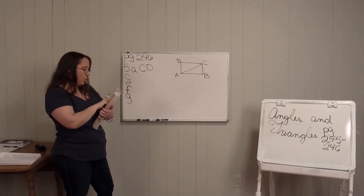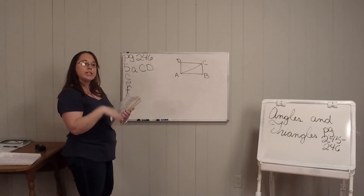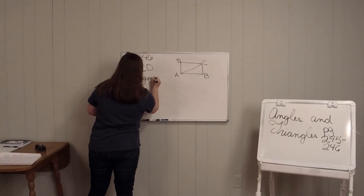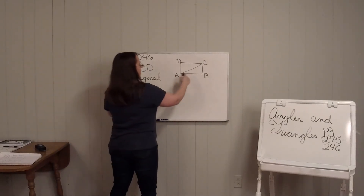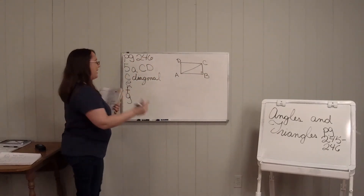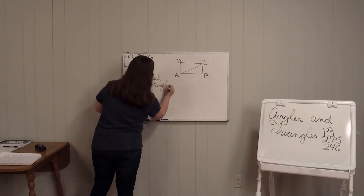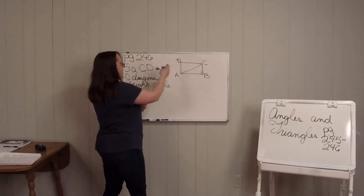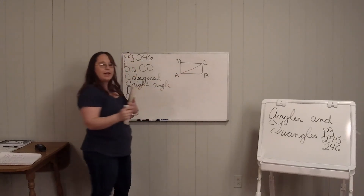Look at C: what is line AC called? Remember back in geometry — it's called a diagonal. Look at E: what kind of angle is angle ABC? You can put your little square there, which means it's a right angle. And F: diagonal AC divides ABCD into how many triangles? How many triangles do we have now? We have two.